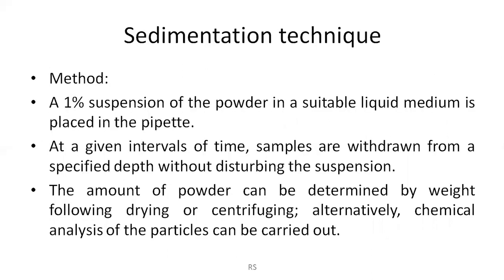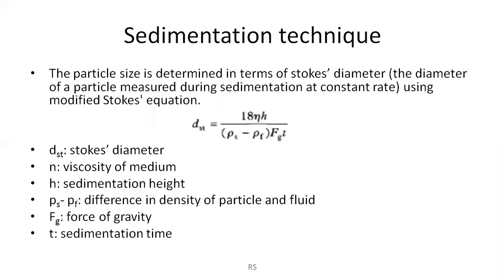In the Andreessen pipette method, a 1% suspension of the powder in a suitable medium is prepared and placed in the pipette. At given time intervals, samples are withdrawn from a specified depth without disturbing the suspension. The amount of powder can be determined by weight following drying or centrifuging; alternatively, chemical analysis can also be carried out. The particle size is determined using the Stokes diameter, as Stokes' law is completely dependent on sedimentation and allows users to identify the sedimentation rate of the powder.